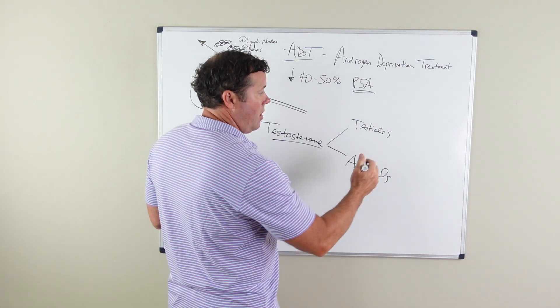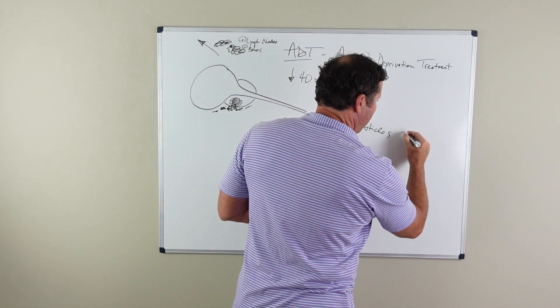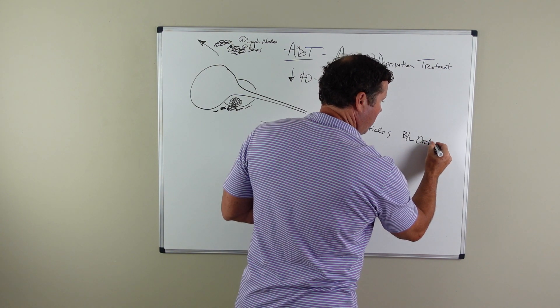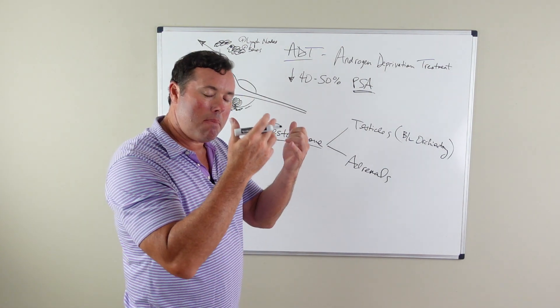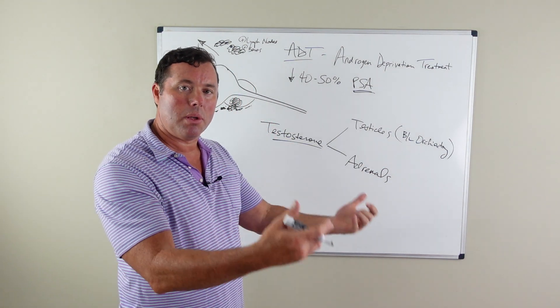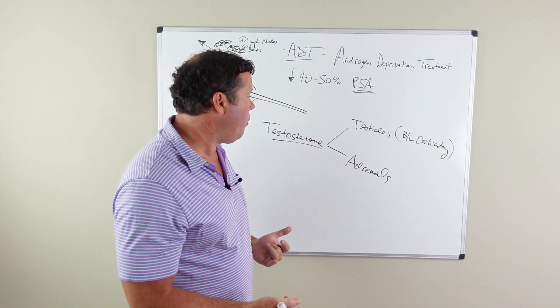ADT can be performed a couple of different ways. One way is by a surgical procedure. You can simply remove the testicles, and what this does is provide immediate decrease of testosterone, usually within hours of having this procedure performed.